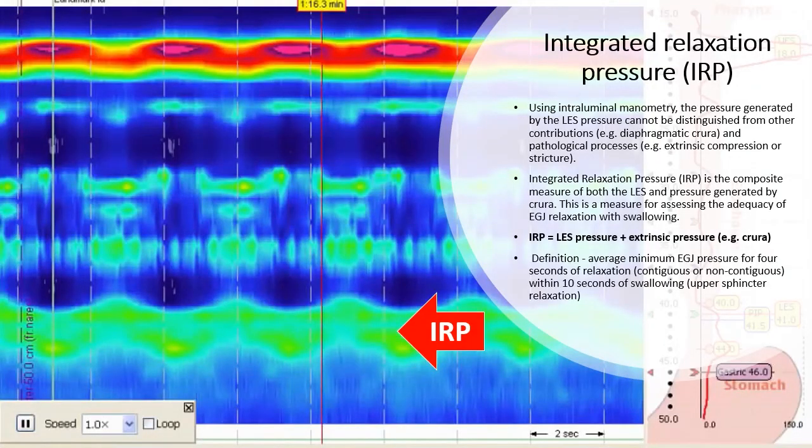Using intraluminal manometry, the pressure generated by the lower esophageal sphincter cannot be distinguished from other contributions like the diaphragmatic crura or pathological processes like extrinsic compression. The integrated relaxation pressure is the composite measure of both the lower esophageal sphincter and the pressure generated by the crura.